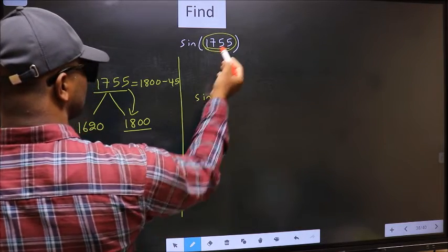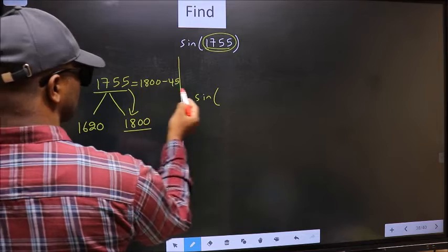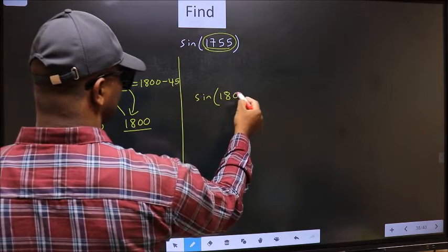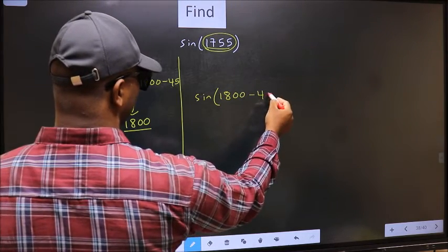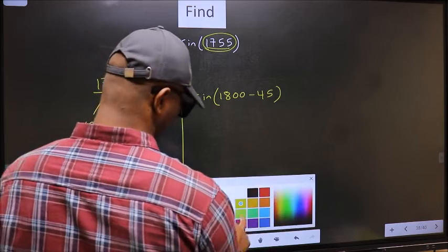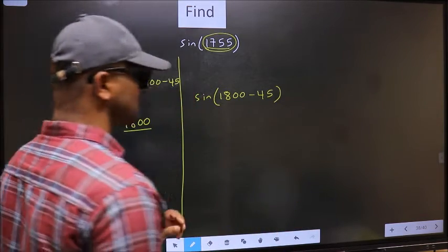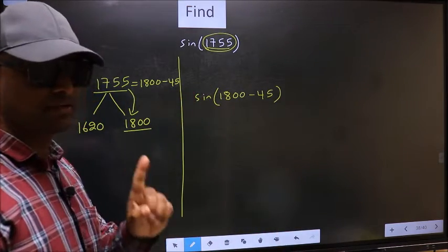In place of this, now we should write this: 1800 minus 45. This is your step 1. Next.